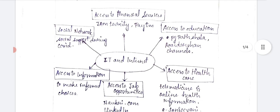First is access to financial services — there are hundreds of examples, but I'll mention two or three. First is the government's JAM Trinity: Jan Dhan, Aadhaar, and Mobile. In 2015, when the government launched the scheme for opening bank accounts, people flooded banks across the country for account opening because of the social security it offered. If everybody has an account, the government can directly transfer money into it.